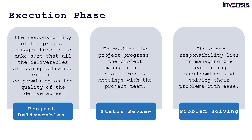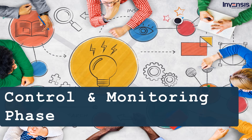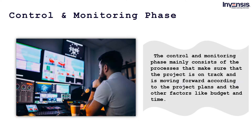After the execution phase comes the control and monitoring phase in the project life cycle. This phase mainly consists of processes that make sure the project is on track and moving forward according to project plans and other factors like budget and time. It works alongside the execution phase, allowing project managers to make sure any shortcomings are being fixed on the go and making it easier to monitor project progress.